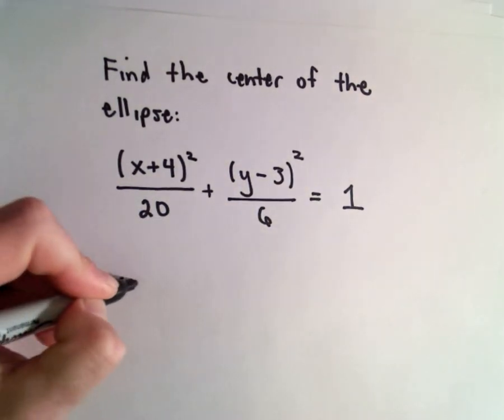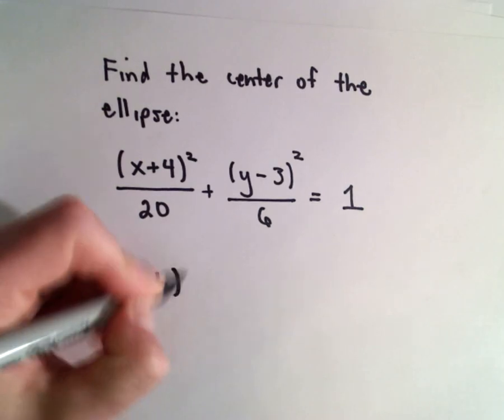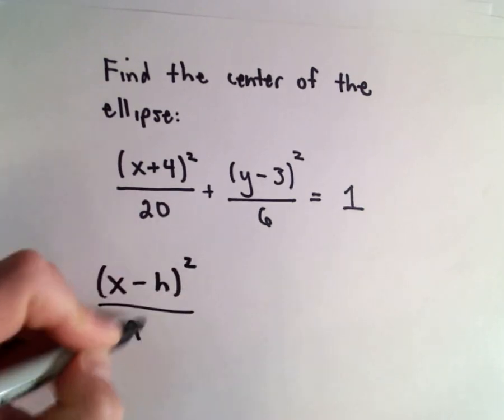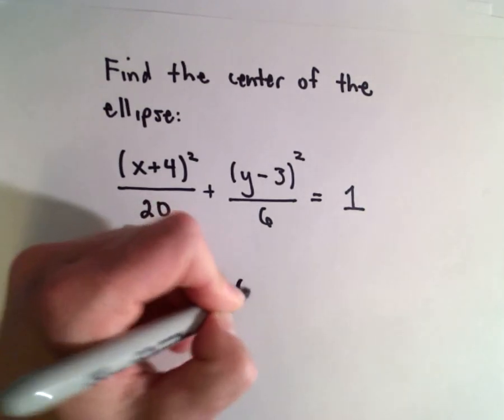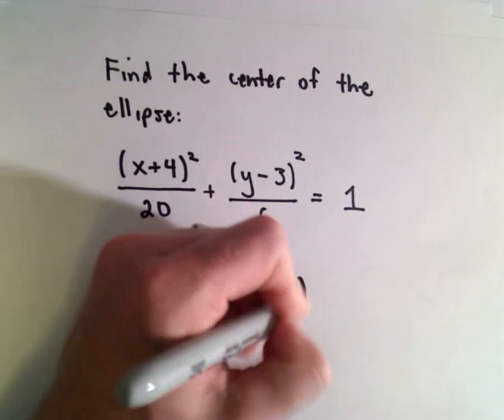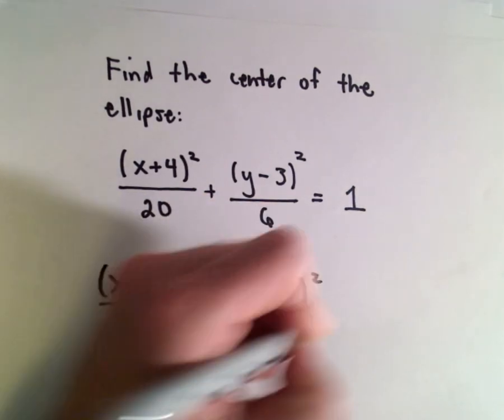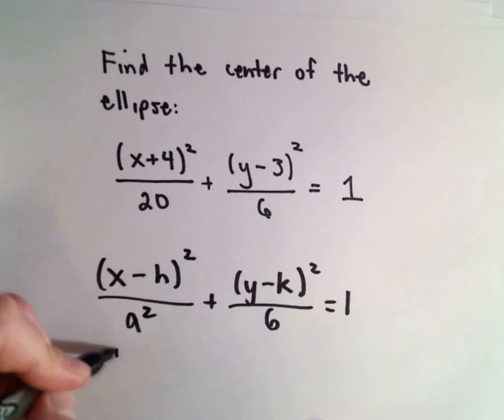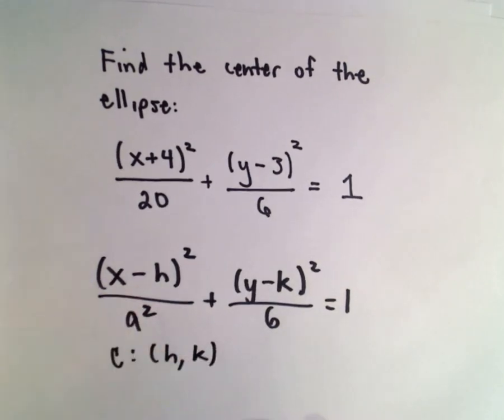So recall, if we have (x-h)² over a² plus (y-k)² divided by 6 equals 1, this has a center at (h, k).